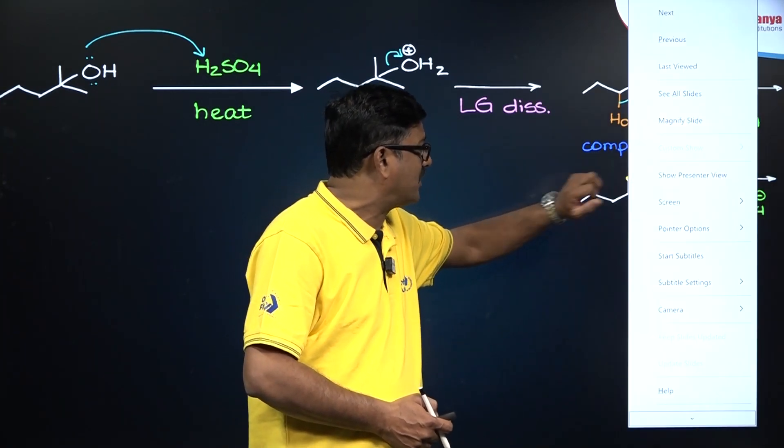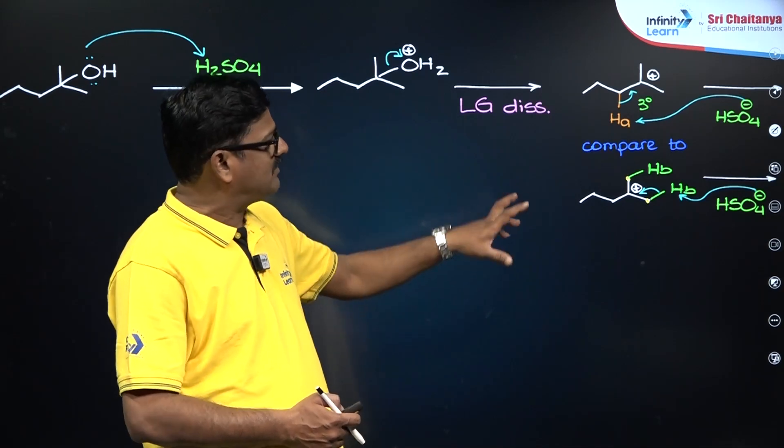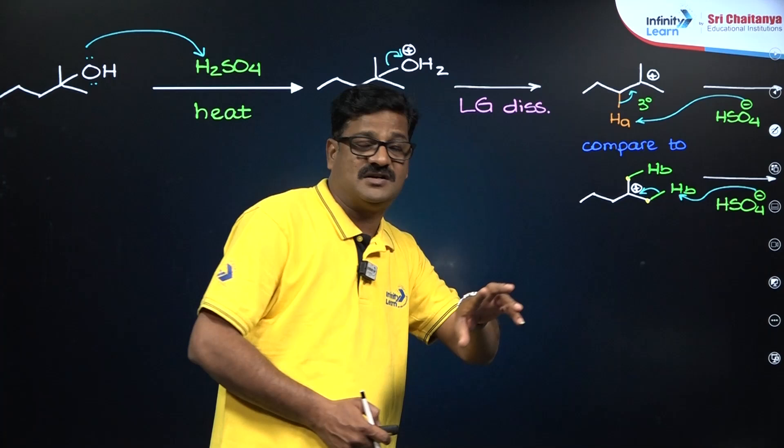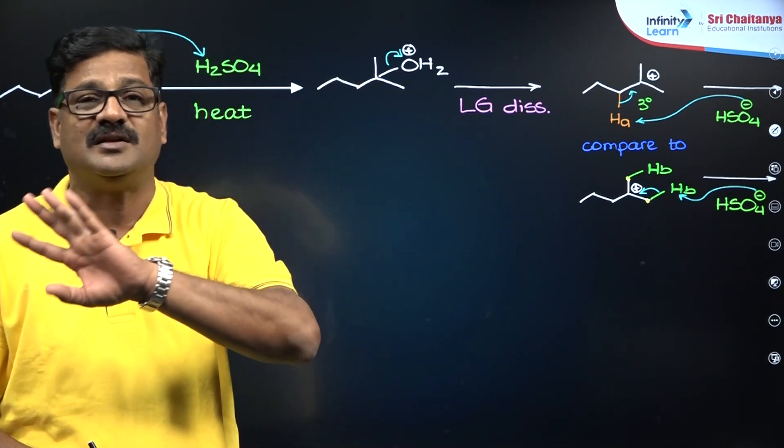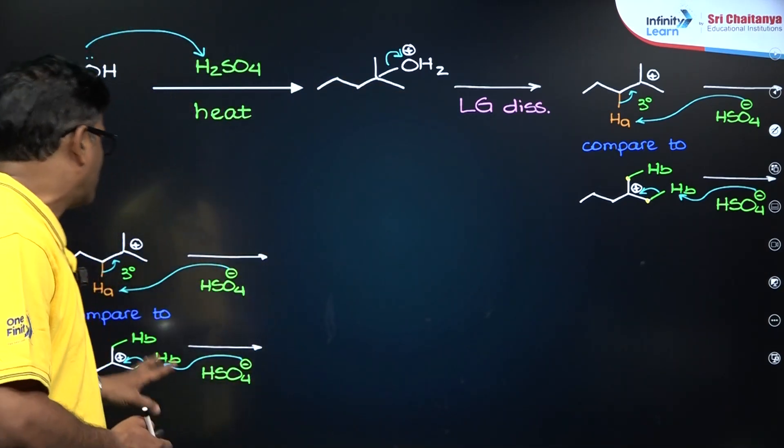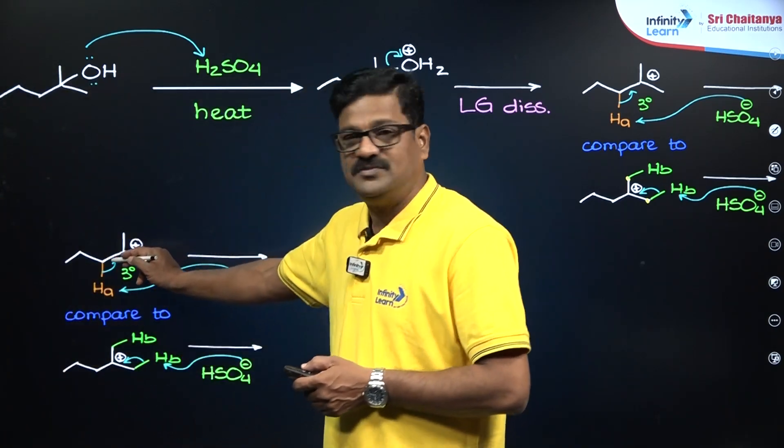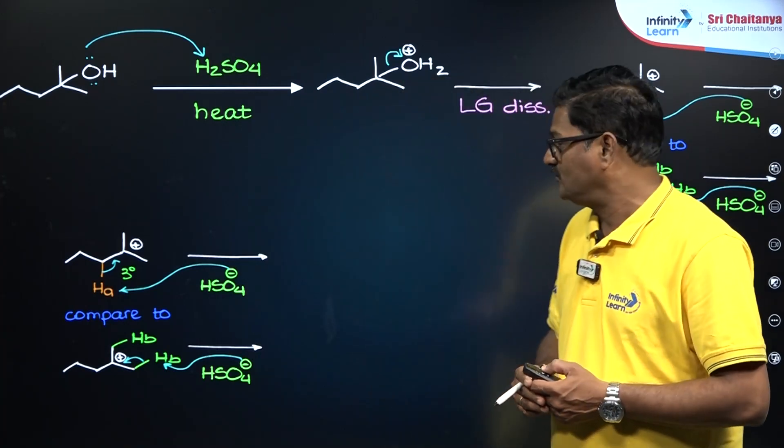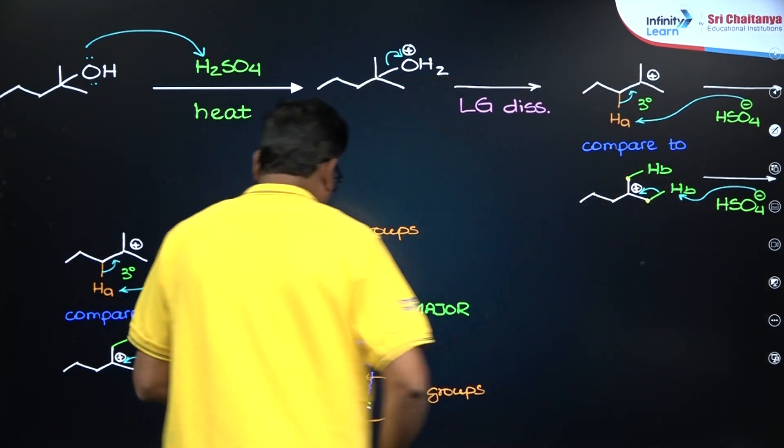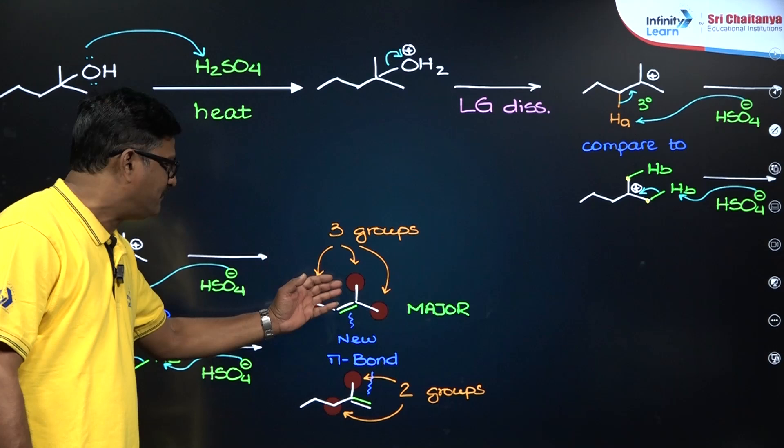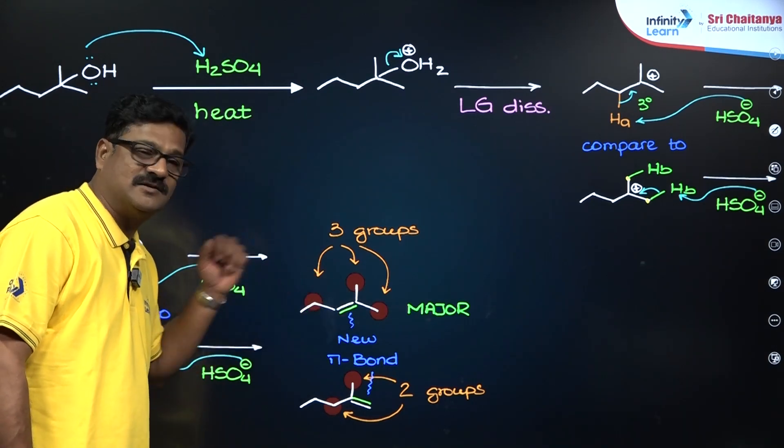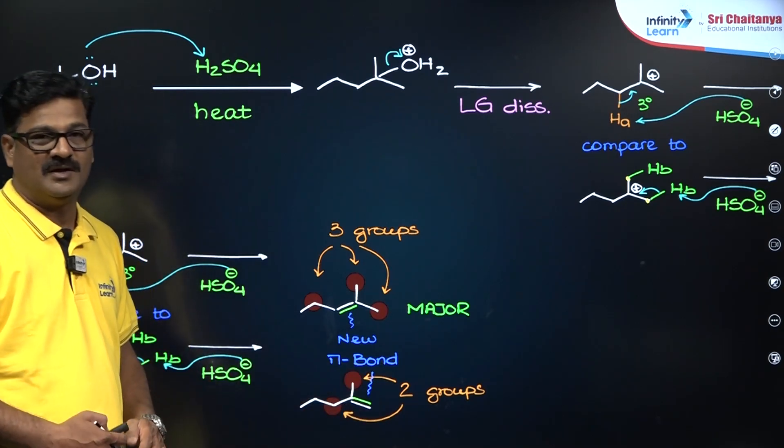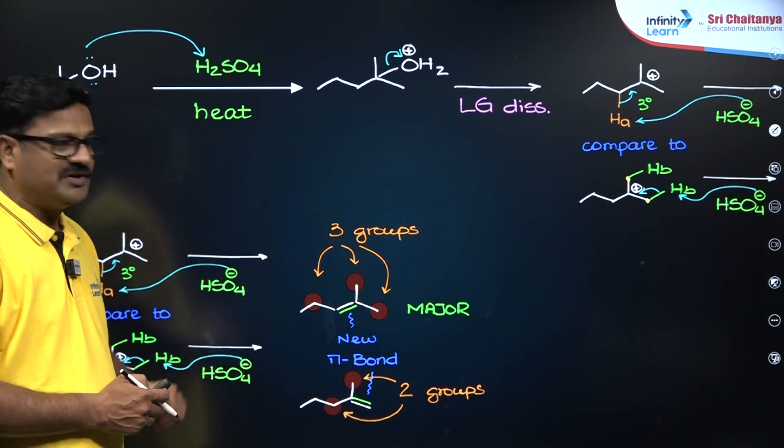This carbocation can be formed here, and this carbocation has hydrogen A on this carbon atom or hydrogen B on this carbon atom. There are two possibilities. When this hydrogen A is eliminated or when this hydrogen B is eliminated, you are going to get two structurally different products. If hydrogen atom A is eliminated, you are going to get this alkene. And when hydrogen atom B is eliminated, you are going to get this alkene. Let us see the stability of these alkenes.